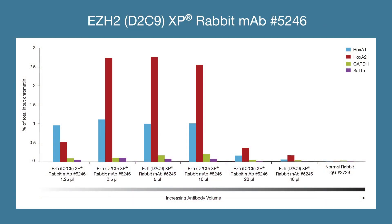The optimal amount of antibody to use in a ChIP assay varies, depending on the antibody's affinity, sensitivity, and specificity. More antibody is not always better. As you can see in this titration data, both too much and too little antibody decreases ChIP signal. For most ChIP-validated antibodies, half to two micrograms of antibody generates an optimal signal-to-noise ratio in the ChIP assay.